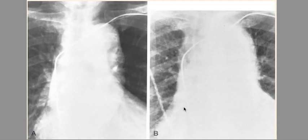Something that initially pops out is the blunting of the aortic knob. All that cardiomediastinal silhouette on the left side has disappeared — we don't see the aortic knob or a lot of the defining structures. On the right side, the same thing is happening. This is characteristic of mediastinal widening, and you should immediately suspect and consider aortic dissection.